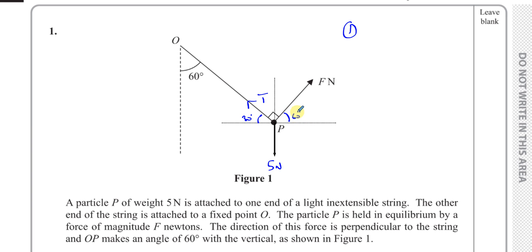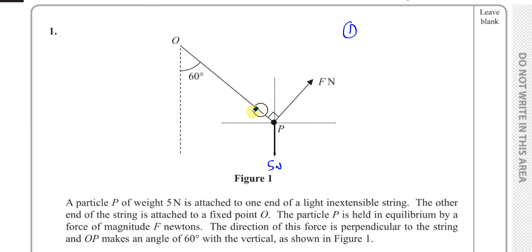We can resolve the forces vertically and horizontally. For example, F cos 60 equals T cos 30, and F sin 60 plus T sin 30 equals 5. That gives a pair of simultaneous equations with F and T. We can solve them to find F and T. However, I'm not going to go down that road because there's an easier way when the forces are perpendicular to each other.